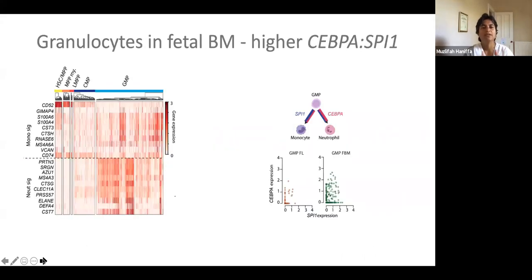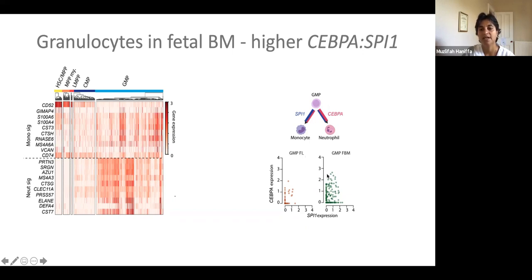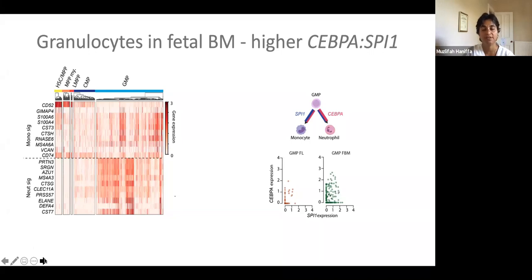Why do we get granulocytes in the fetal bone marrow? One of the reasons we think this is relates to the relative abundance of transcription factors that drive neutrophil differentiation versus monocyte differentiation. If you look at the GMPs from the bone marrow, some of the cells have already got the monocyte signature and others the neutrophil signature. We know that CEBPA and SPI-1 are the two key drivers for these lineages. When we compared the GMPs in the fetal bone marrow with GMPs in the fetal liver, you can see many more cells expressing much higher levels of CEBPA and a higher ratio to SPI-1, and this is probably one of the reasons why neutrophils emerge in the fetal bone marrow.